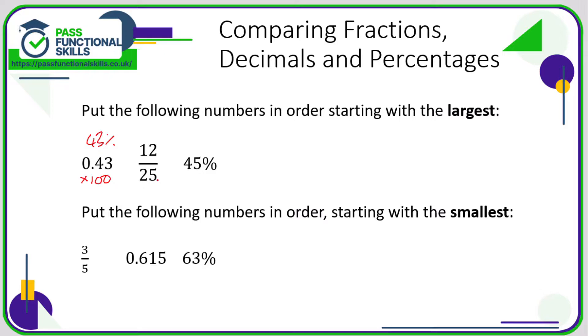But here we've got a denominator of 25, and a fraction out of 25 is quite easy to convert into a percentage. Remember percent means out of 100, so to turn a 25 into a 100 you're multiplying by 4, so for the equivalent fraction we need to multiply the top by 4. So that's 48 out of 100, so this is 48 percent.